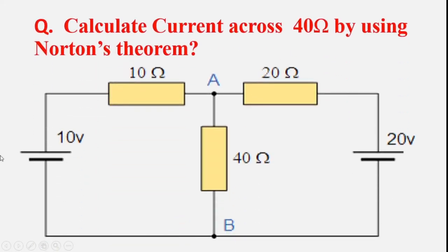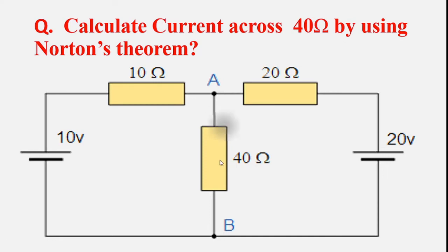This is the problem now: calculate the current across the 40 ohm resistor by using Norton's theorem. In my previous video for Thevenin's theorem, I have also used this circuit diagram and calculated the current across the 40 ohm. Here also we use Norton's theorem and calculate IL, the load current, across the 40 ohm.